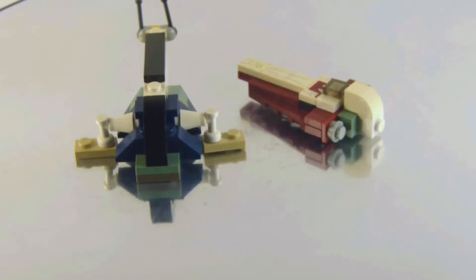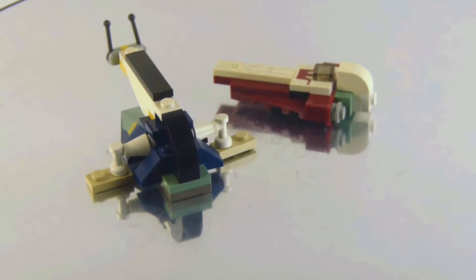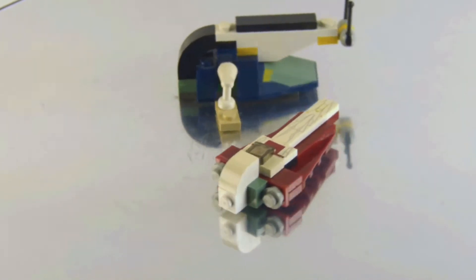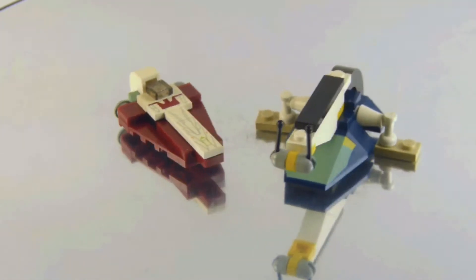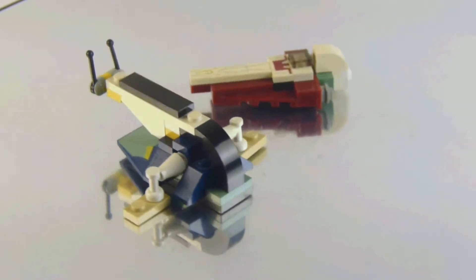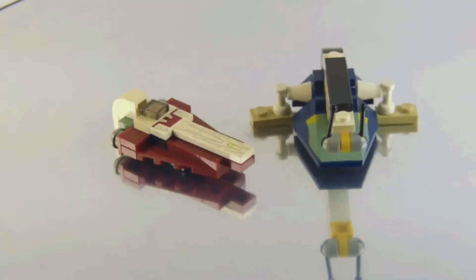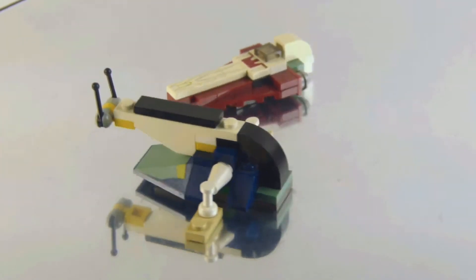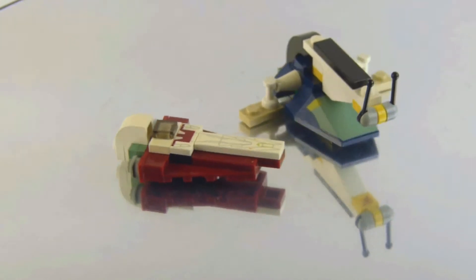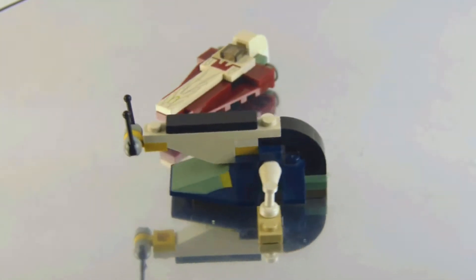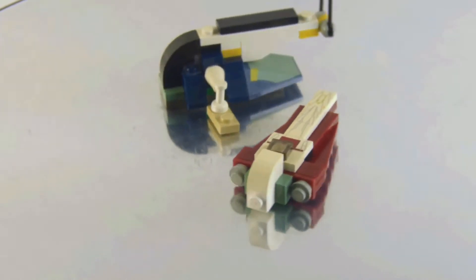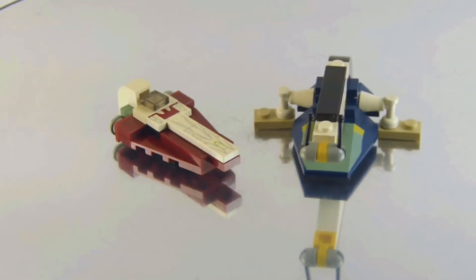Now this set doesn't have any stickers, but what you see is what you get. So not really play features which are included in the set other than the two ships there. You get the Slave 1 which really needs to be remade in minifig form at some point in the future. So that's long overdue.